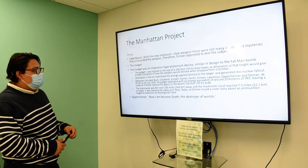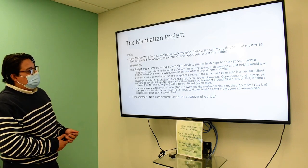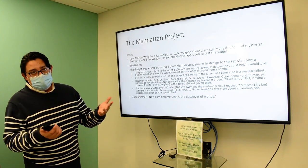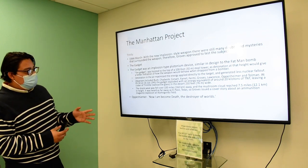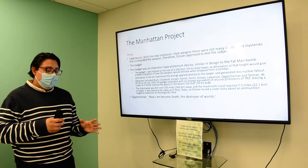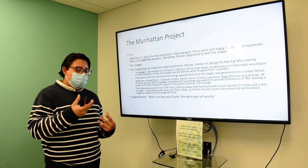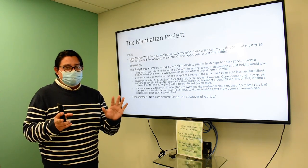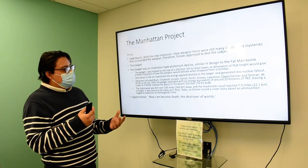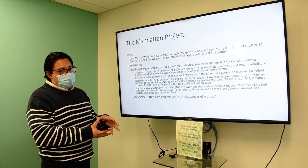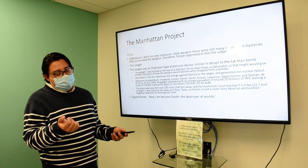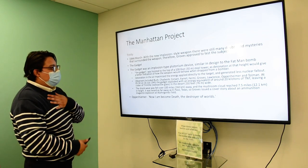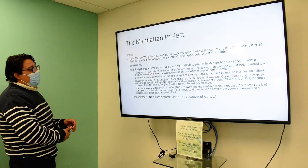They tested the implosion design with 'the Gadget,' which was an implosion-type plutonium device. They wanted to use plutonium with the same implosion mechanics — plutonium actually works better with the implosion design than it would with the gun barrel design used with Little Boy and uranium.